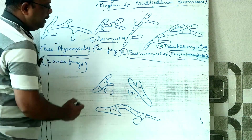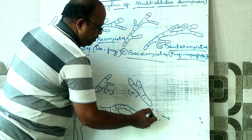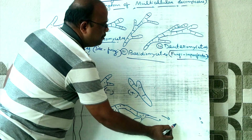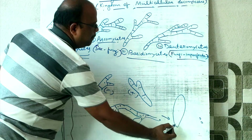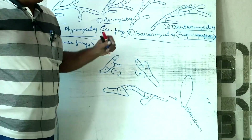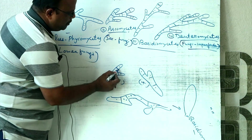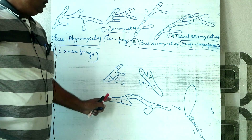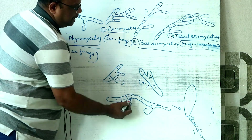The mycelium becomes dikaryotic — containing two nuclei. This dikaryotic mycelium eventually develops into a structure called the basidium.